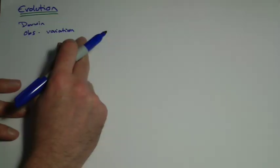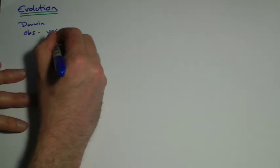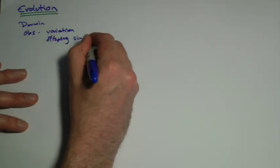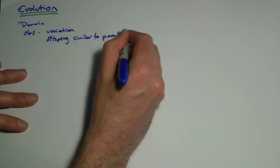So what Darwin said was he noticed that organisms showed variation. There were differences, basically. But even though things were different, offspring were different, organisms were different to each other, organisms were similar to their parents. Now that might seem obvious to us. You might go, well of course you look similar to your parents.